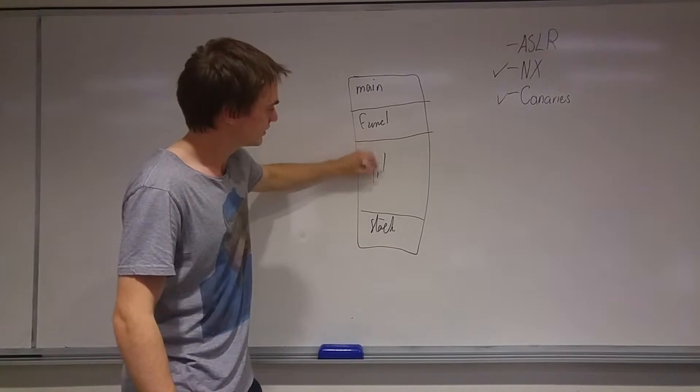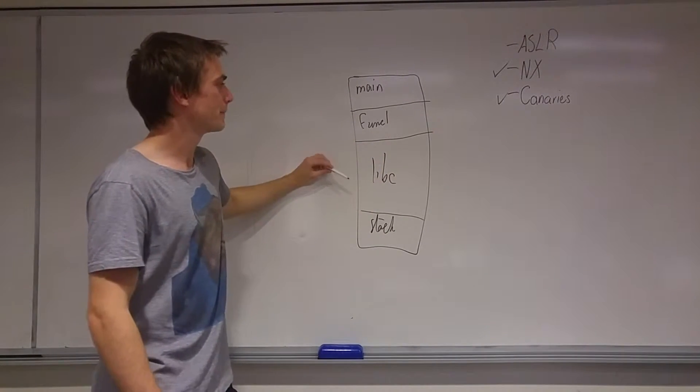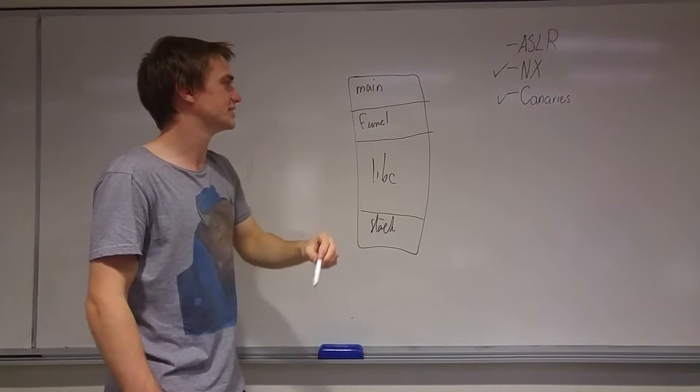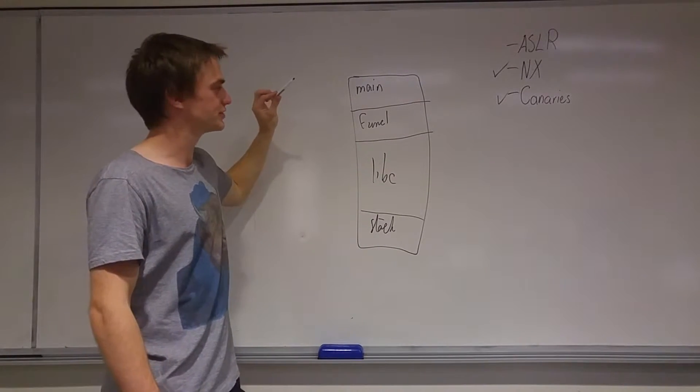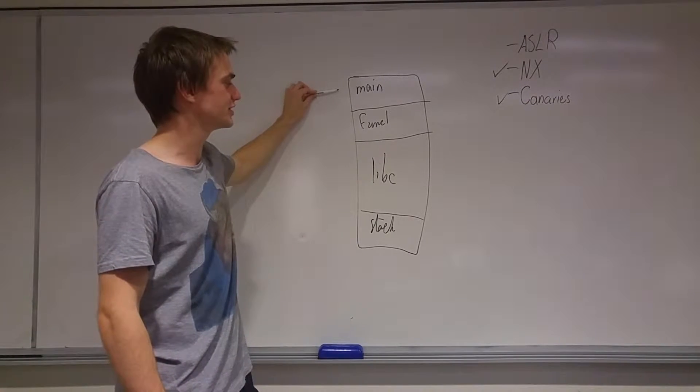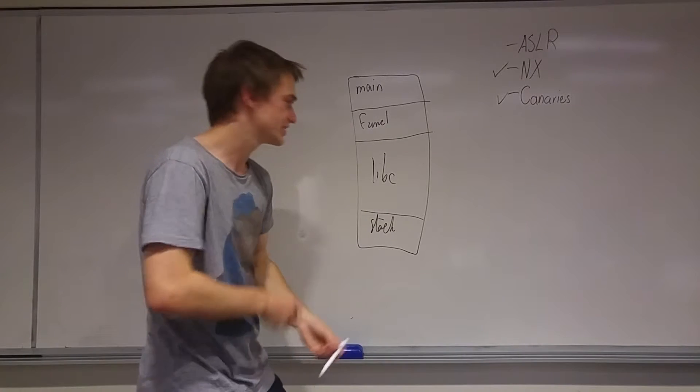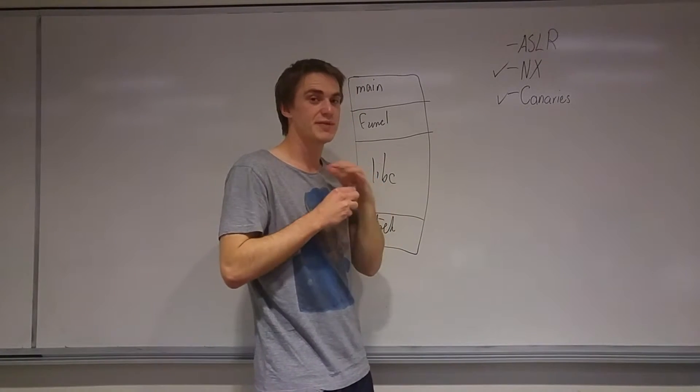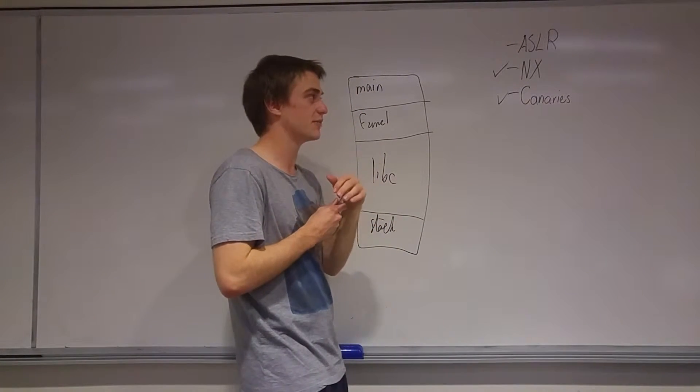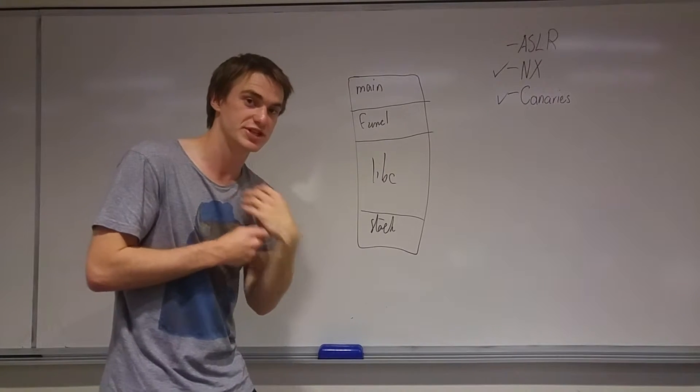Basically what it does is it says, and then we'll say libc is here. Basically what ASLR does is it says, every time you run this program, this stuff is going to change. So maybe it's not always going to be at the top, it's going to be down here, and then this is going to be over there, and it just makes life a massive mess. So as you can imagine, how are you meant to return to something when its address changes almost every time?